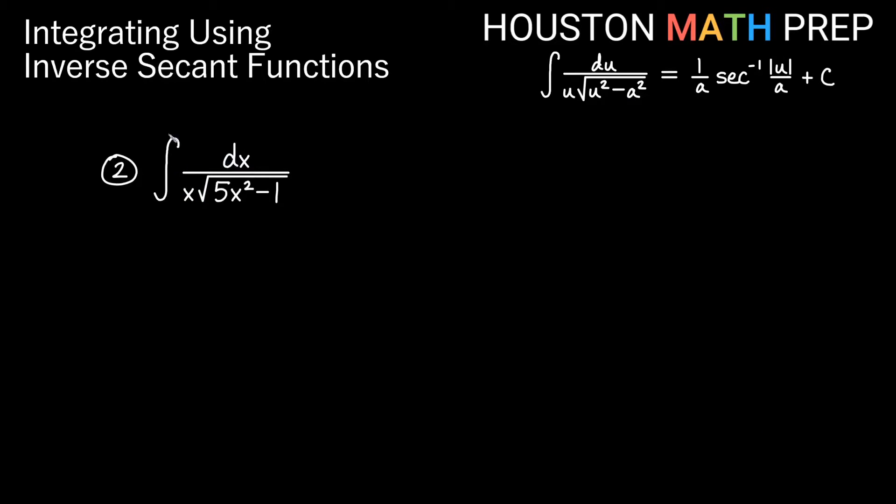Looking at our second one here, we have the integral of dx over x times the square root of 5x squared minus 1. So it looks just like this here. We've got variable squared minus constant squared. So this is going to be our a squared here in the back, and this 5x squared is actually going to be our u squared in the front.